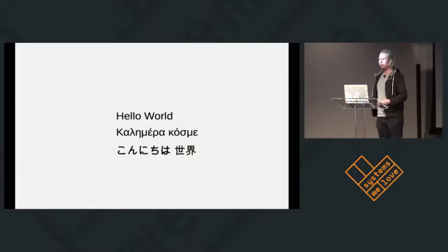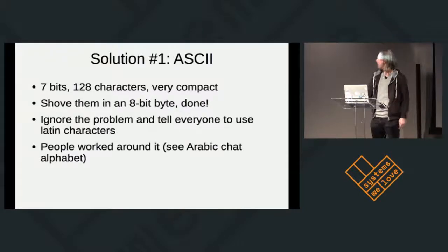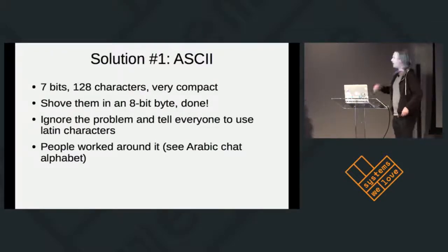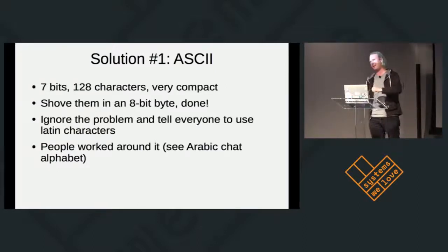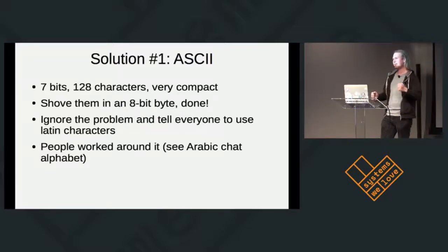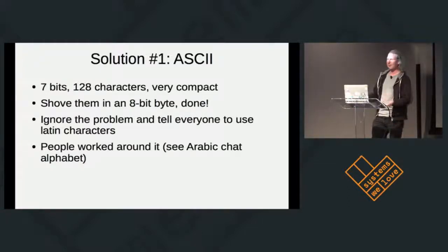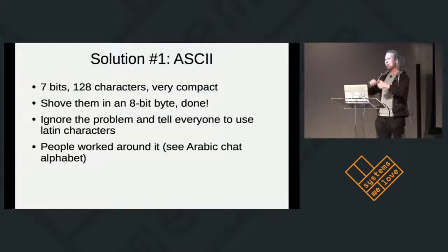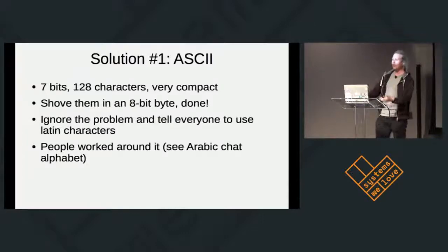The problem that UTF-8 is meant to solve is the problem of representing text. How we usually represent text is that we have a string of characters. One solution is just use ASCII. This worked for a long time — you have seven bits, 128 characters, it's very compact. It works great if you're English or American or speak any language that can be fit into ASCII-looking things.